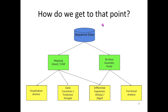When you get data back from a sequencing center, you basically just get sequence. There are two things you can do: align it to a reference genome, or do a de novo assembly. All the methods we're going to talk about here are based on alignment. Once you've aligned your reads, you can visualize them. You can look at gene models using tools like Stringtie, or you can do differential expression, which is what we're doing today. From differential expression, you can take your list of interesting genes and go on to do functional analysis.